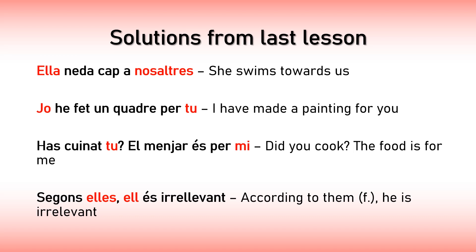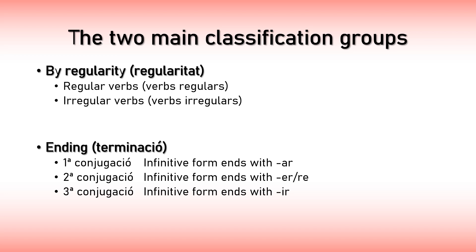So there are two main groups to classify verbs. The first one is by regularity — that is, if the verbs are regular or irregular, just like in English. The other group is by ending. Regular verbs follow a pattern when you conjugate them, so if you know the pattern for one verb you can use that pattern for the rest, making it easier to learn.